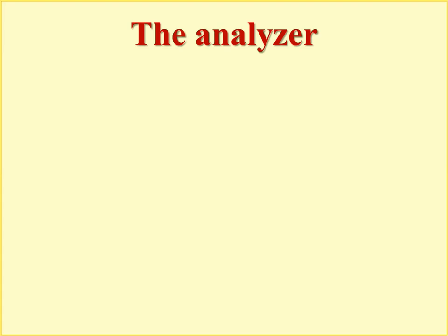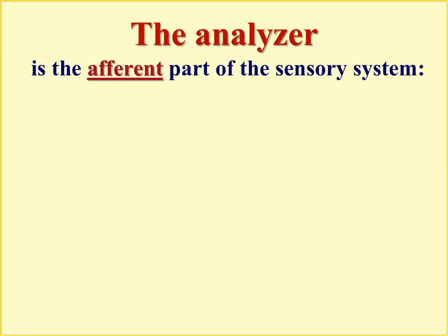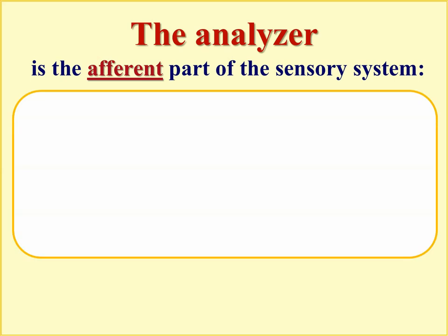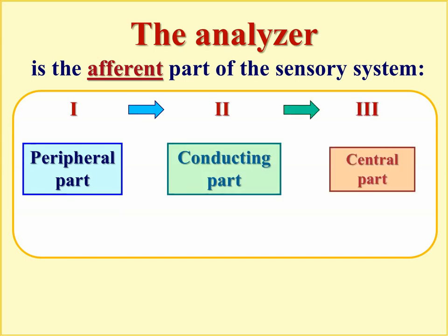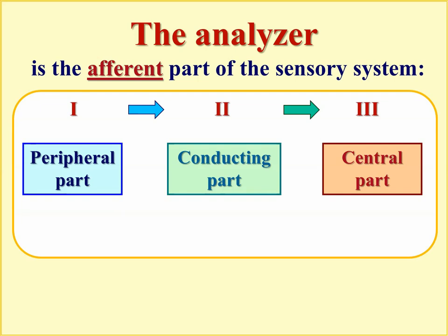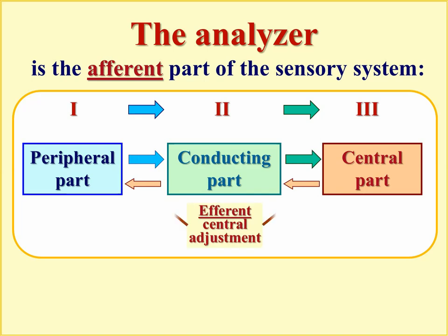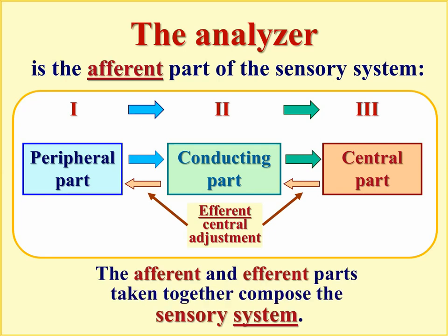The analyzer is the major part of the sensory system that includes the sensory ascending pathways. Each analyzer, according to the classification of the Russian physiologist Pavlov, consists of three parts: the peripheral part, the conducting part, and finally the central part, which is always the sensory cortex of the corresponding sensory system. An analyzer includes most of the ascending sensory fibers from periphery to center, but also less numerous descending fibers from center to periphery, providing efferent central adjustment of receptor sensitivity. When we include these descending pathways, together they compose the sensory system.